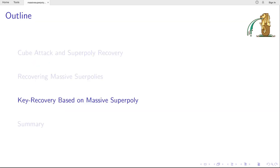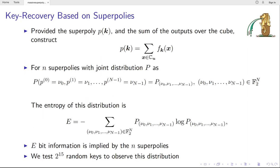The second technique contribution is the key recovery based on the Super-Poly that we recovered. Provided the Super-Poly and the sum of the outputs over the cube, we can construct an equation of the Super-Poly. For n Super-Polys, if their joint distribution is p, like this. For each value v_0, v_1, until v_(n-1), the probability is corresponding this p. We can calculate the entropy of this distribution using the definition of the entropy.